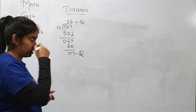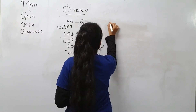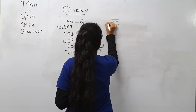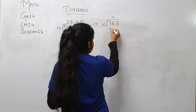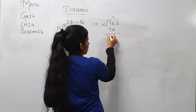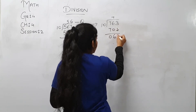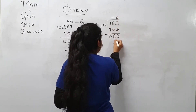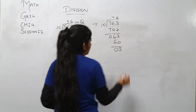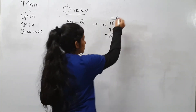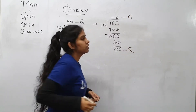Now let's solve the other sum: 763 divided by 10. 10 sevens are 70, 6 carry forward and 0. Now 3; 10 sixes are 60. 3 and 0. So we got the quotient 76 and remainder 3.